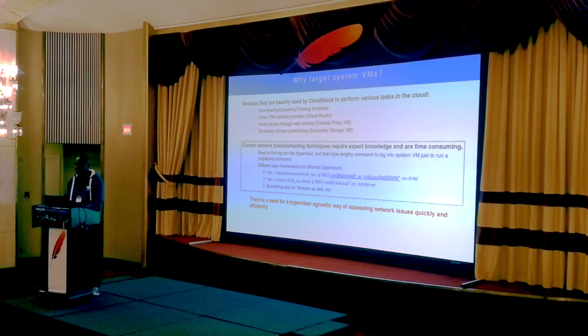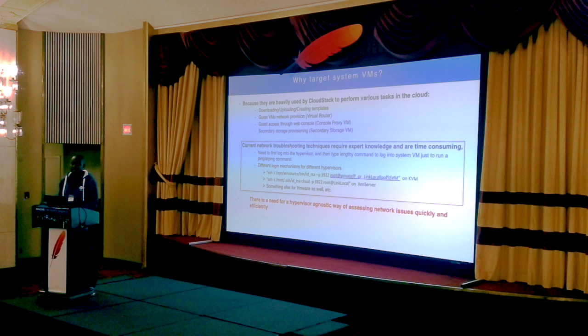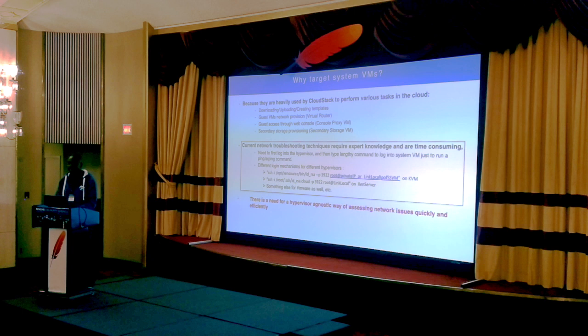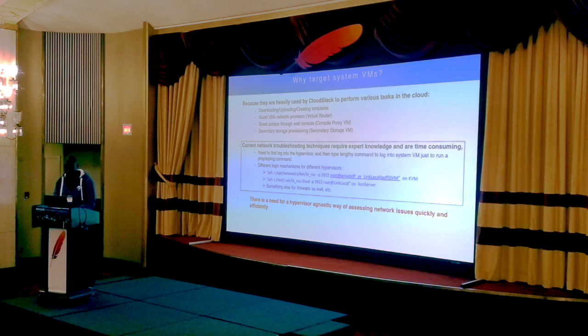One might ask: why are we targeting system VMs? Because system VMs are very important in CloudStack. We use them for performing a lot of operations within the cloud — downloading, uploading, or creating templates. We also need the virtual router for provisioning network utilities within the cloud, and we need them for providing secondary storage capabilities.